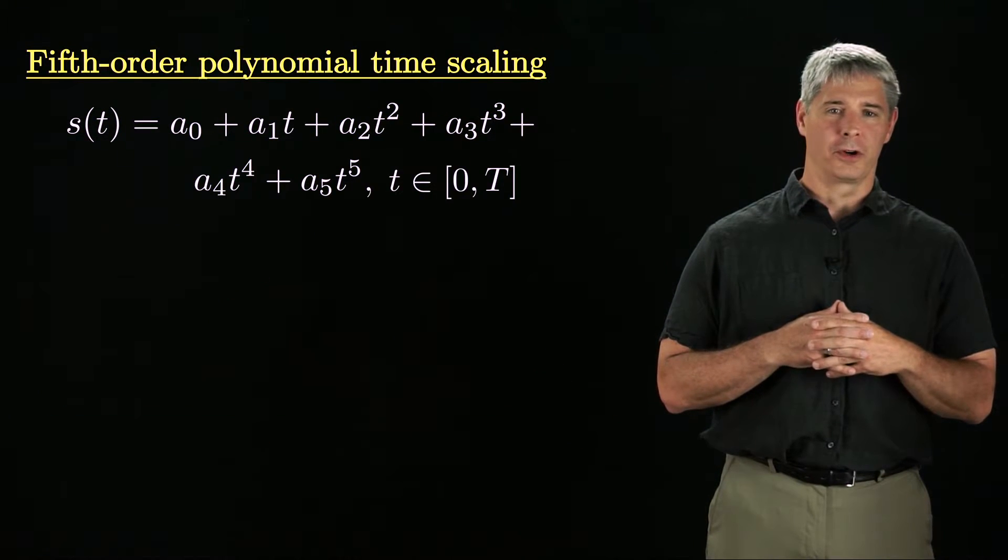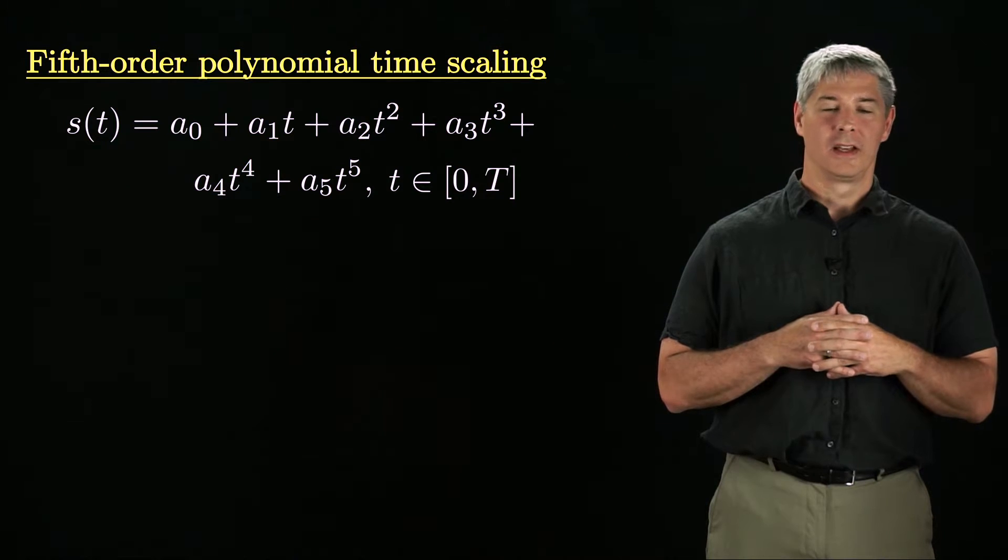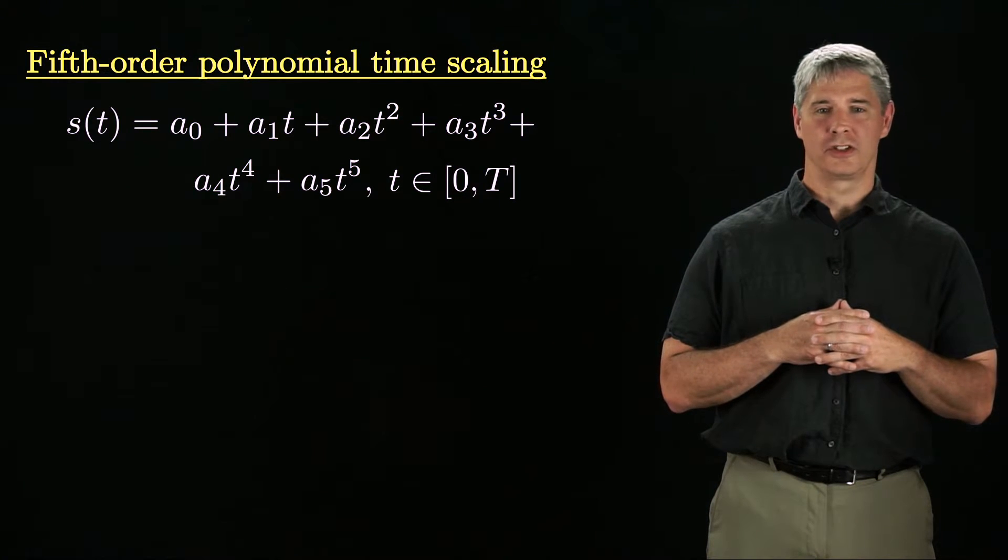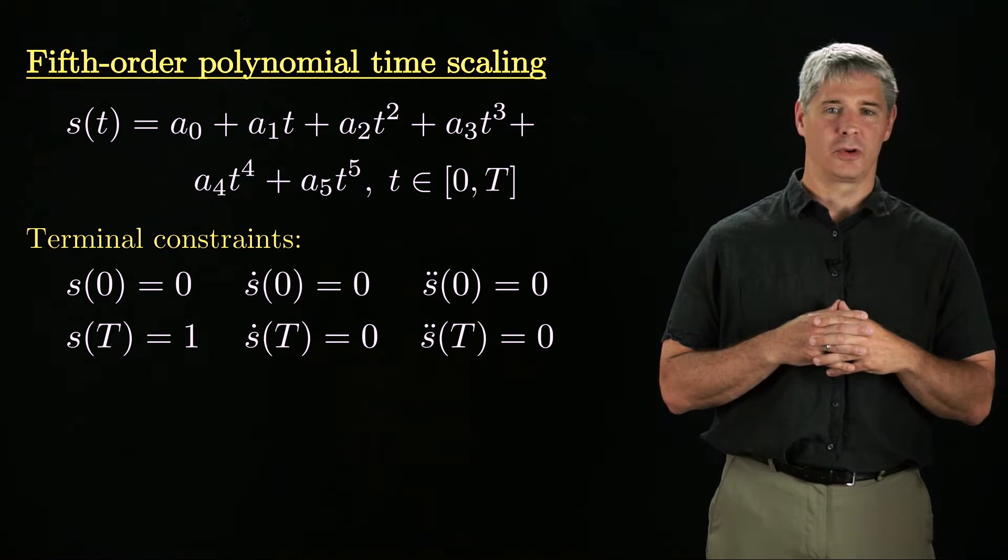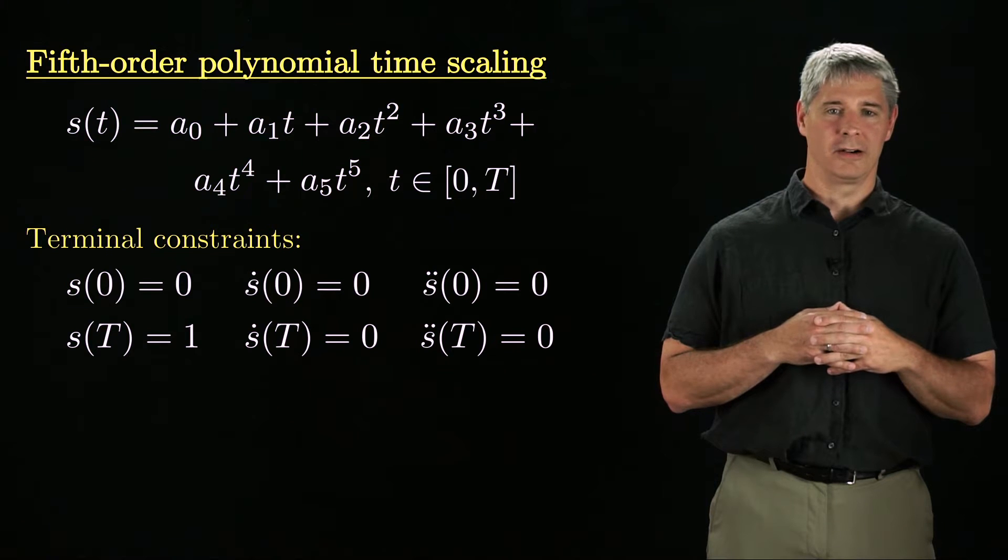If we would prefer a smoother motion, where the acceleration at the beginning and end of the motion are zero, we can use a fifth-order polynomial time scaling. A fifth-order polynomial gives us two more coefficients to choose, and we use them to satisfy two more terminal constraints, that the acceleration is zero at time zero and capital T.